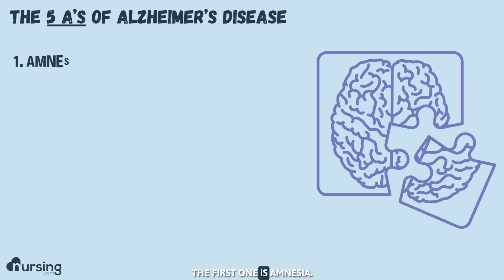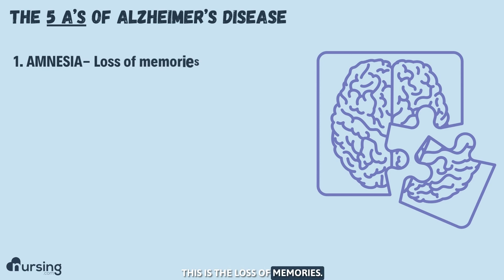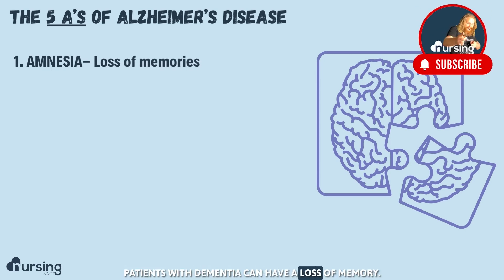The first A is amnesia. This is the loss of memories. Patients with dementia can have a loss of memory.